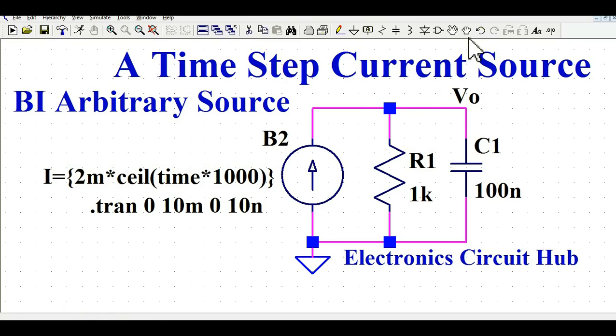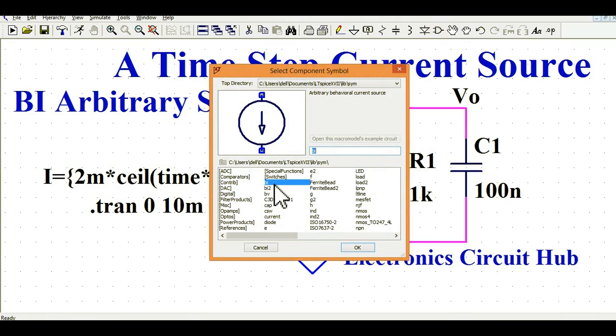So if you go to this component library and if you see BI here and BI2, this is basically, if you look at here, this is an arbitrary behavioral current source.